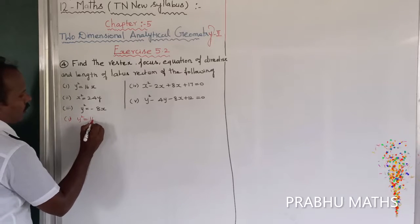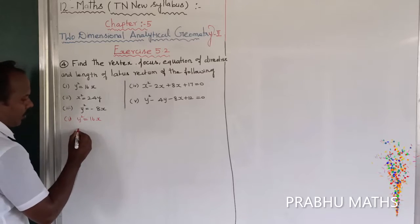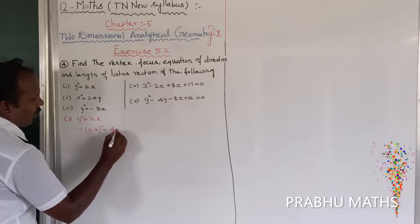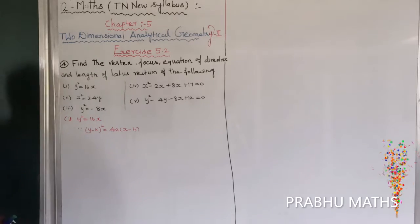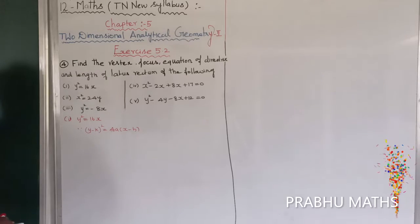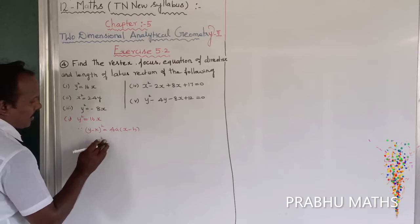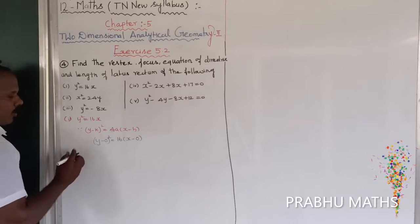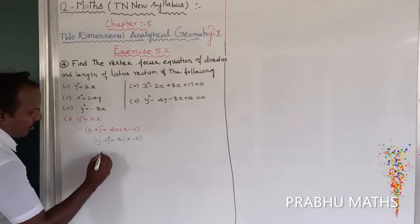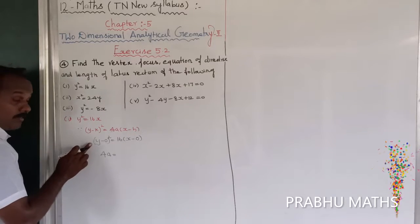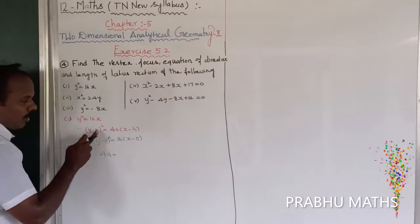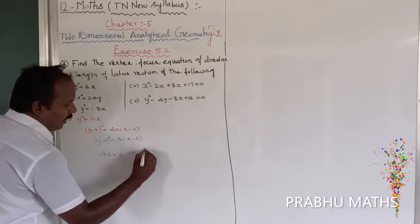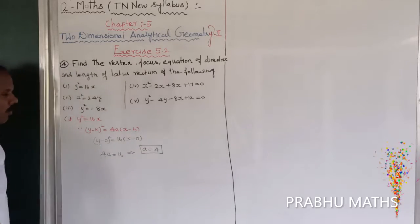The given equation is y squared equal to 16x. The standard general form is y minus k whole square equal to 4a into x minus h. Comparing, we rewrite as y minus 0 whole square equal to 16 into x minus 0. So 4a is equal to 16, which implies a is equal to 4.